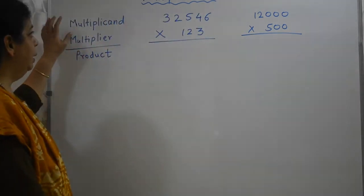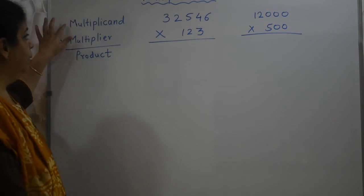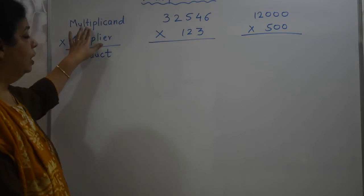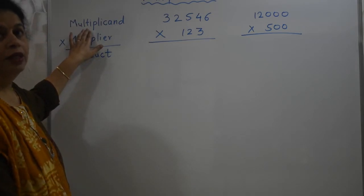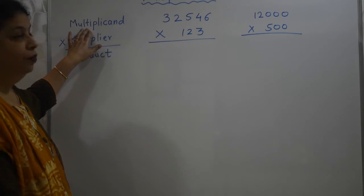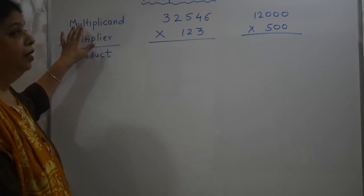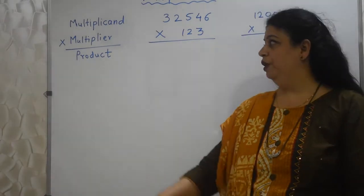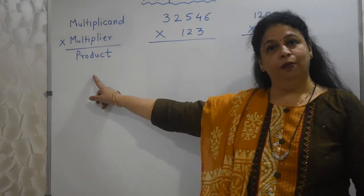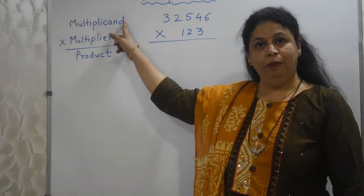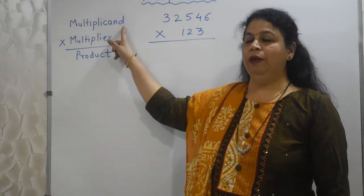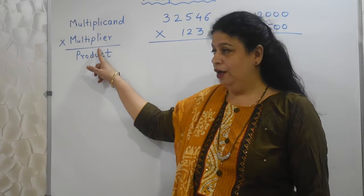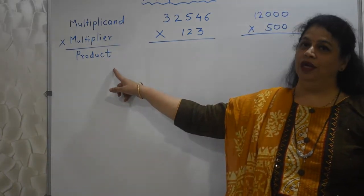See students, multiplication. In multiplication, one number is multiplied with other number and you get the answer. So this number which is on top is called as the multiplicand. And we multiply this multiplicand by another number which is called as multiplier. And after the multiplication is over, we get the answer. That answer is called as the product.